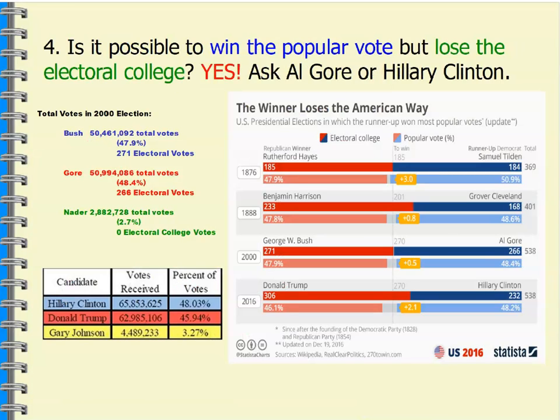Is it possible to win the popular vote and lose the Electoral College? You betcha — ask Al Gore or Hillary Clinton. Hillary Clinton won almost 3 million more votes than Donald Trump but lost the Electoral College and, as a result, lost the presidency. Al Gore won 500,000 more votes than George W. Bush but didn't win the Electoral College — he didn't win Florida. At 266 electoral votes, he only needed 3 more; had he won his home state, he would have been president.